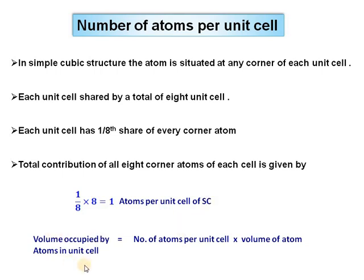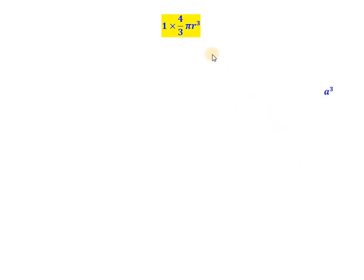The volume occupied by atoms in the unit cell equals the number of atoms per unit cell multiplied by the volume of one atom. Since each atom is a sphere, its volume is (4/3)πr³. With one atom per unit cell, the total volume of atoms in the unit cell is simply (4/3)πr³.